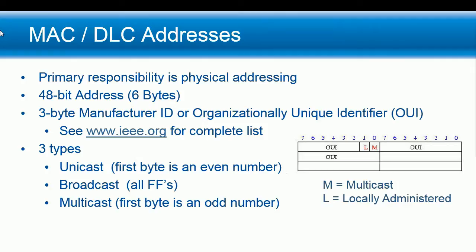The first six bytes is the destination MAC address. Both source and destination are six bytes. The first three bytes is the manufacturer ID, or OUI — organizationally unique identifier — and the IEEE hands those out. You can see the complete list at www.ieee.org.